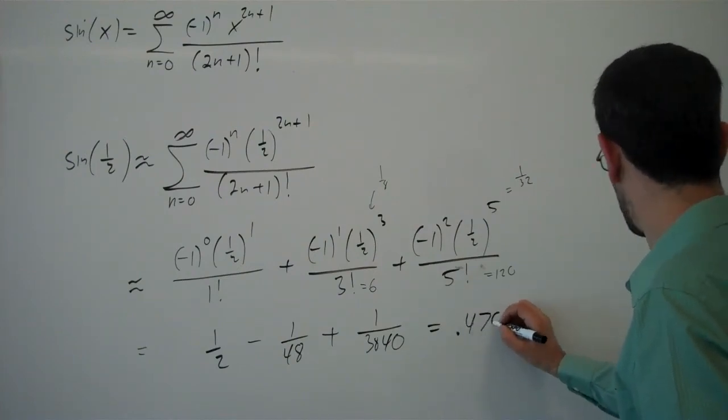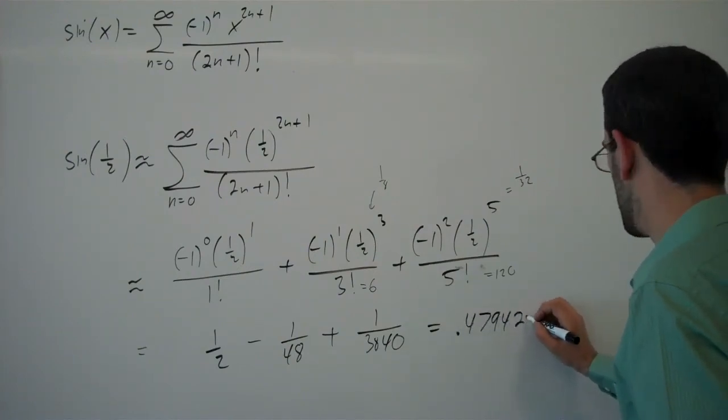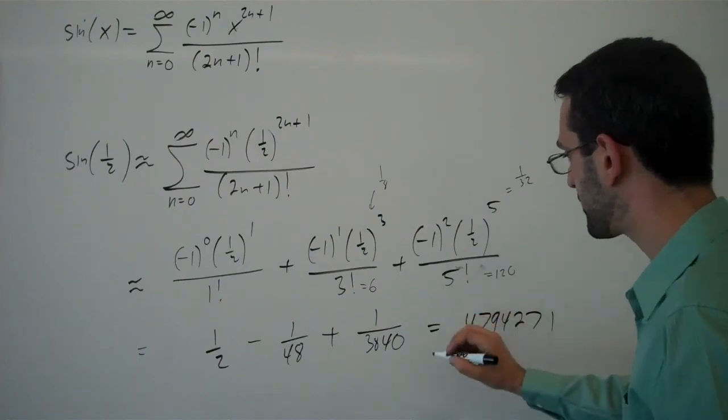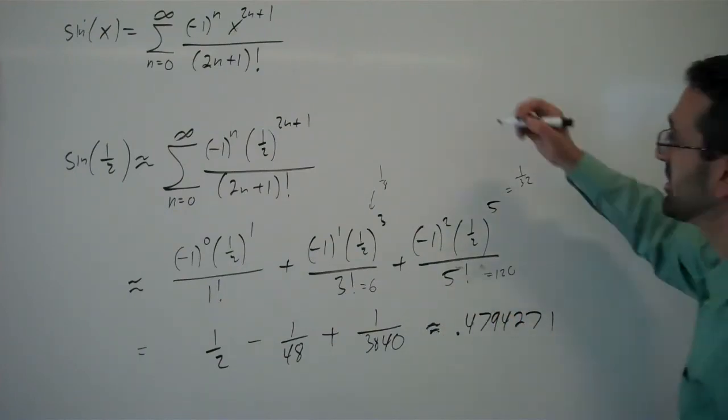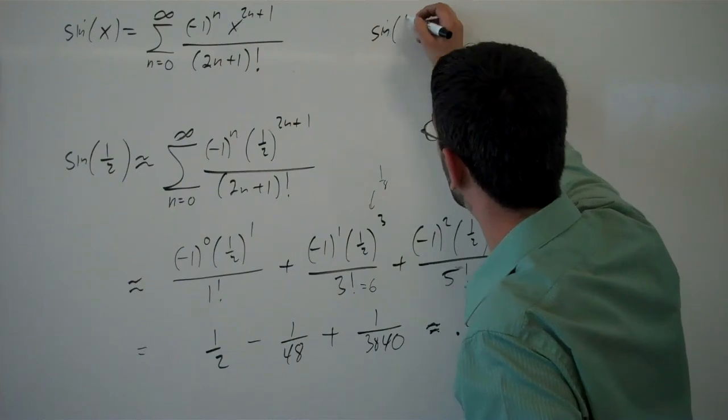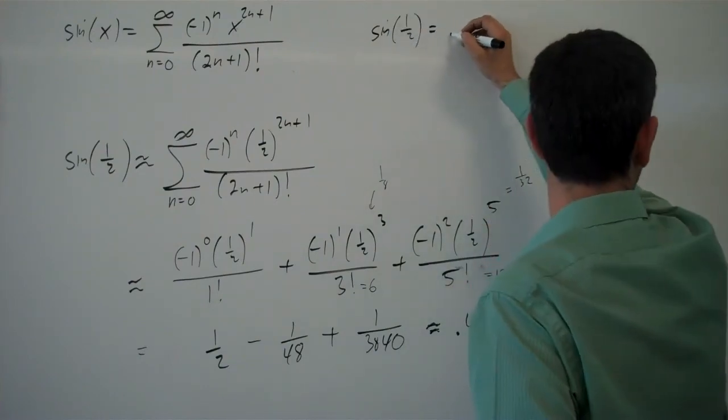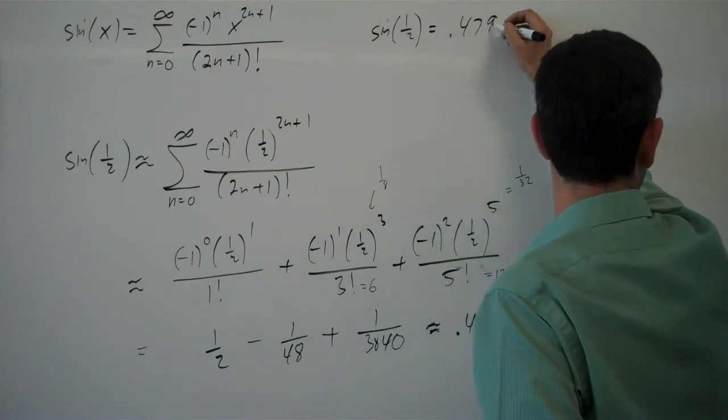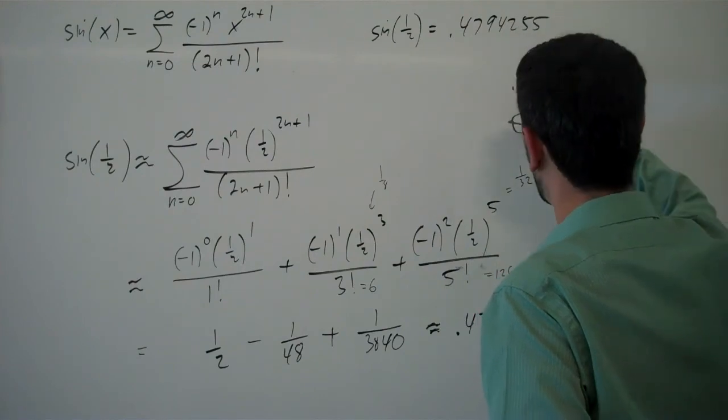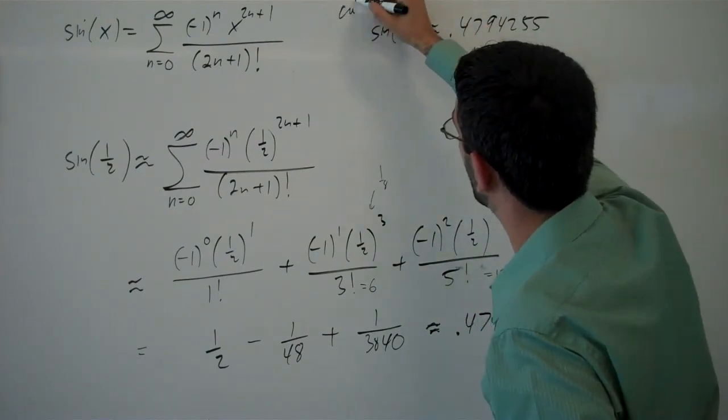And if I add those together and do a decimal approximation, I come up with 0.4794271 about. Now, I used my calculator earlier to evaluate sine of one half and came up with 0.4794255 about. So this is using my calculator.